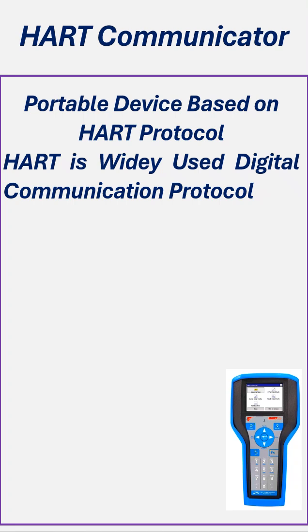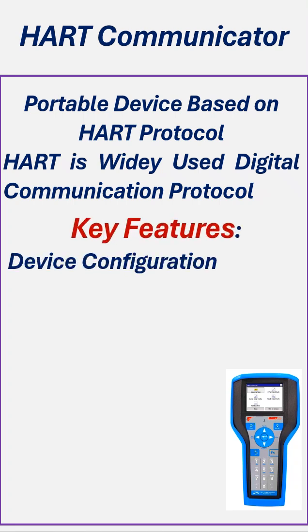Key features of a HART communicator. Device configuration: configures settings like range, units, and scaling for field instruments, ensuring proper measurement and reporting.